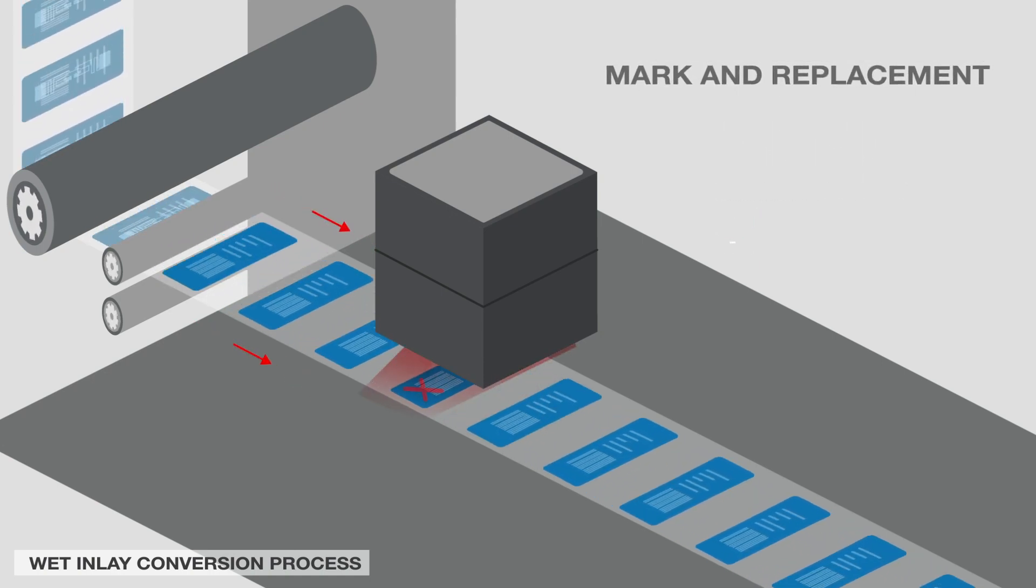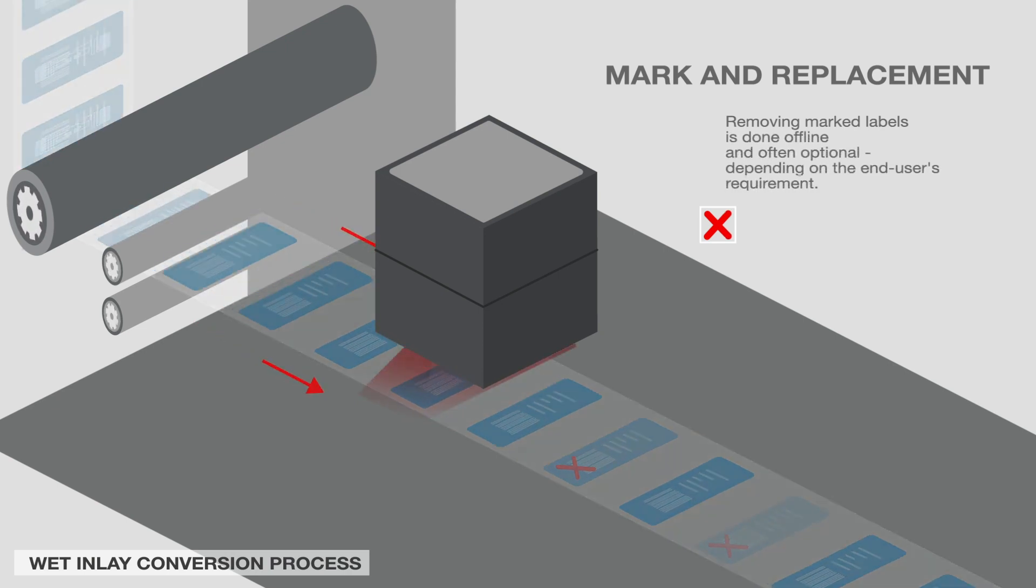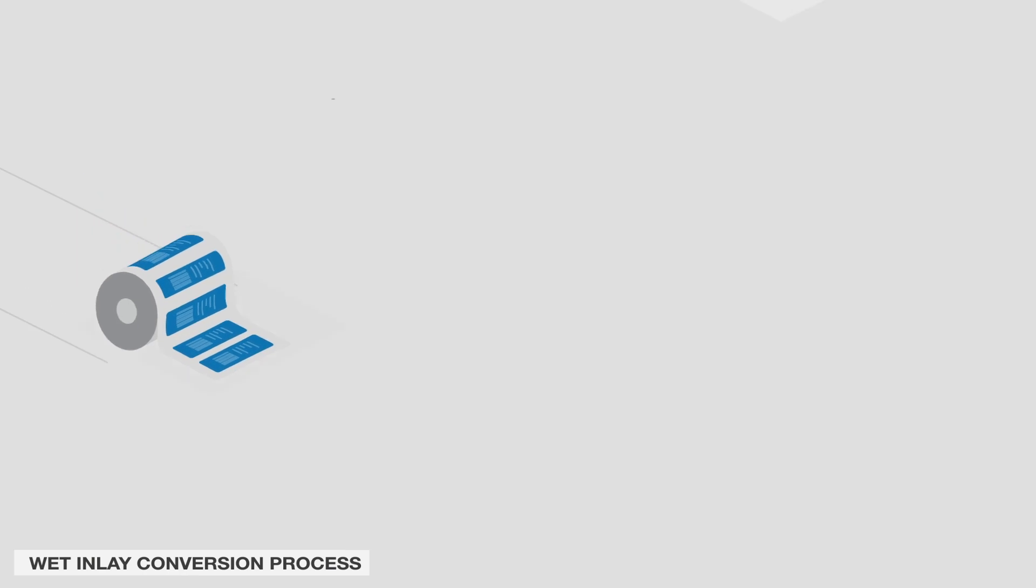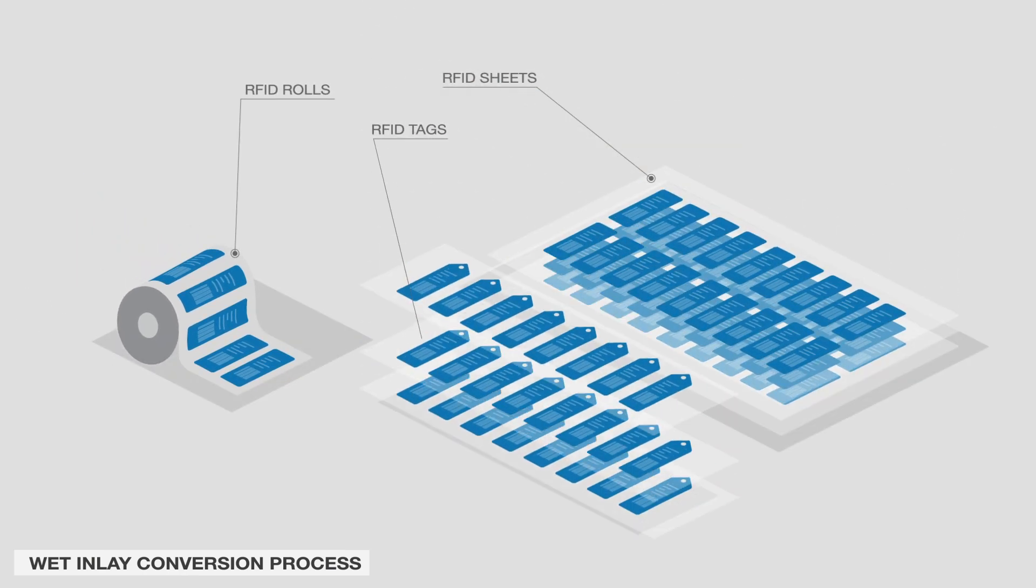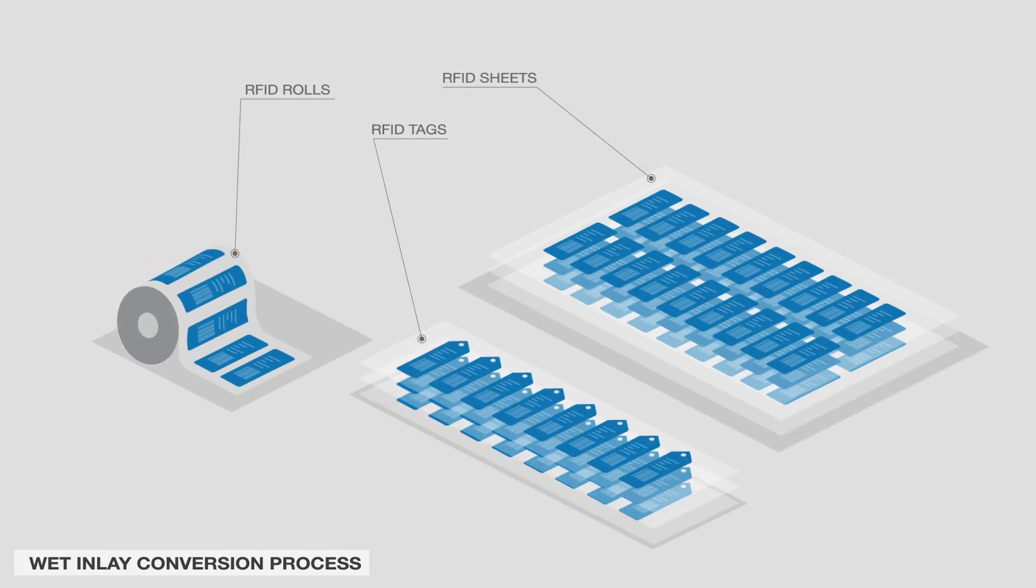Finally, marked defective tags are removed before packaging depending on the end-user's requirements. The end product can be converted into rolls, sheets, or finished products such as labels and tags.